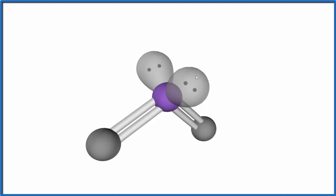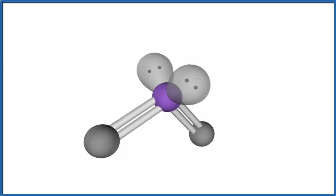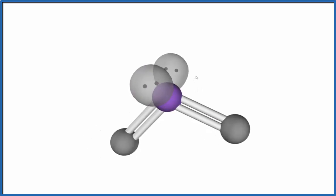If we looked at the electron geometry, where we take these lone pairs into account, as well as these atoms, we have a tetrahedral electron geometry. But the molecular geometry, that's going to be bent. The ideal bond angle is 109.5. It's going to be a little different for this. Let's go back to our Lewis structure.